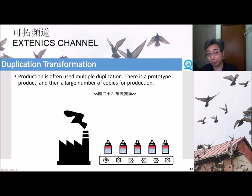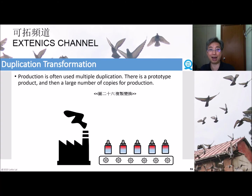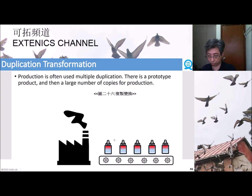For example, in the production line, it often uses multiple duplications. A prototype is produced first, and then a large number of copied products are produced — this is called mass production. Like this, a new prototype is duplicated during the production process.